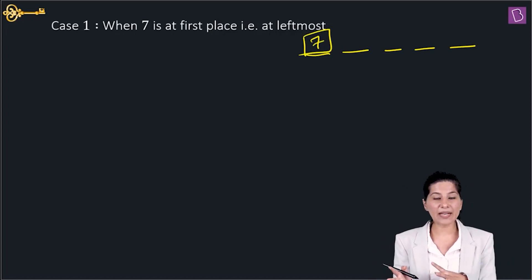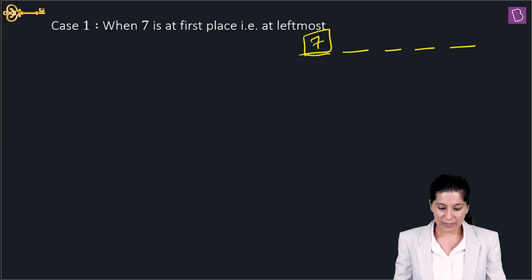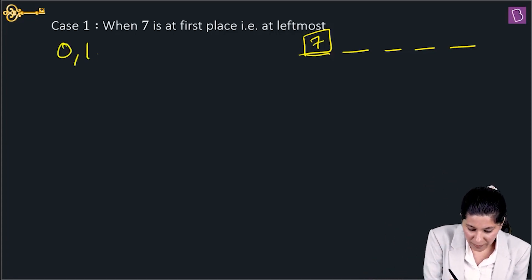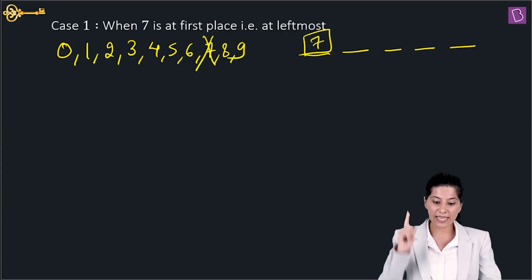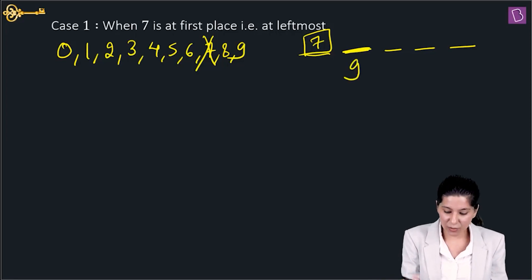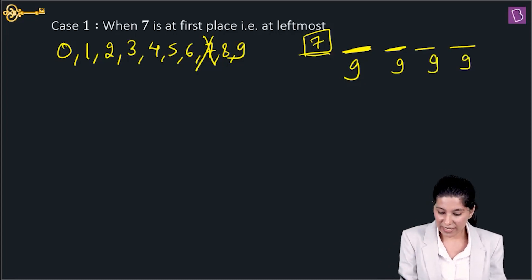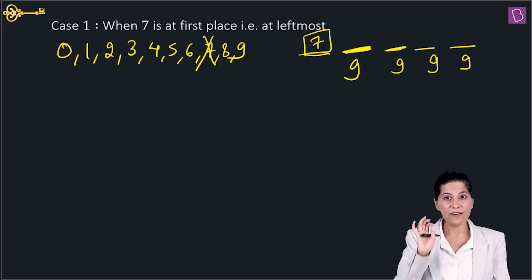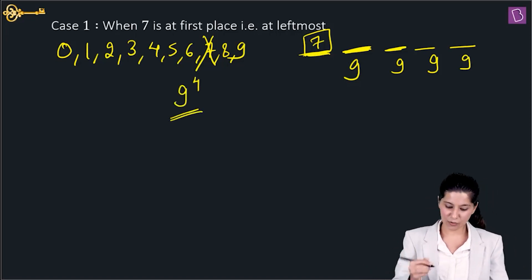The question doesn't say whether digits can repeat, so by default repetition is allowed. In total there are 10 digits (0–9). Since 7 is used, 9 digits remain for each of the other 4 places, giving 9 options each. So Case 1 gives 9 raised to the power 4 ways.